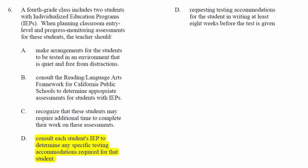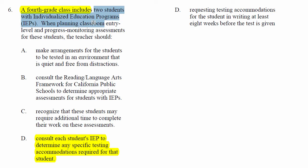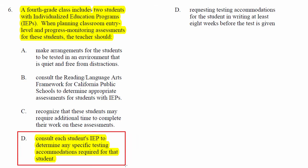Let's take a look at question 6. A fourth grade class — and remember, when looking at grade levels, it's important sometimes to think about whether we're in the learning-to-read stage or reading-to-learn stage. Here it's asking about two students with IEPs, and when planning classroom-level and progress monitoring assessments for these students, what should the teacher do? If the child's got an IEP, it has to be followed, so the teacher has to read it.